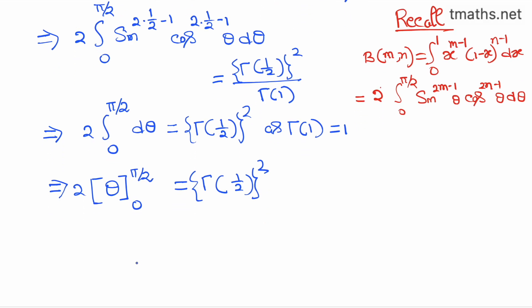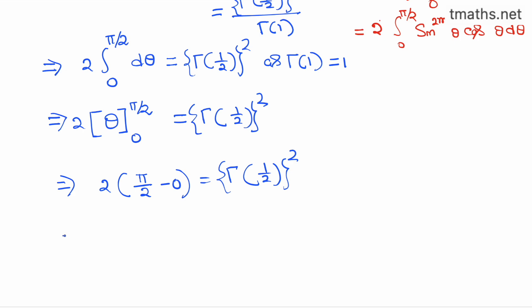Now, see that the left hand side is equal to 2 times π/2 minus 0. That is, the left hand side will be equal to π, which is again equal to gamma of half whole square.